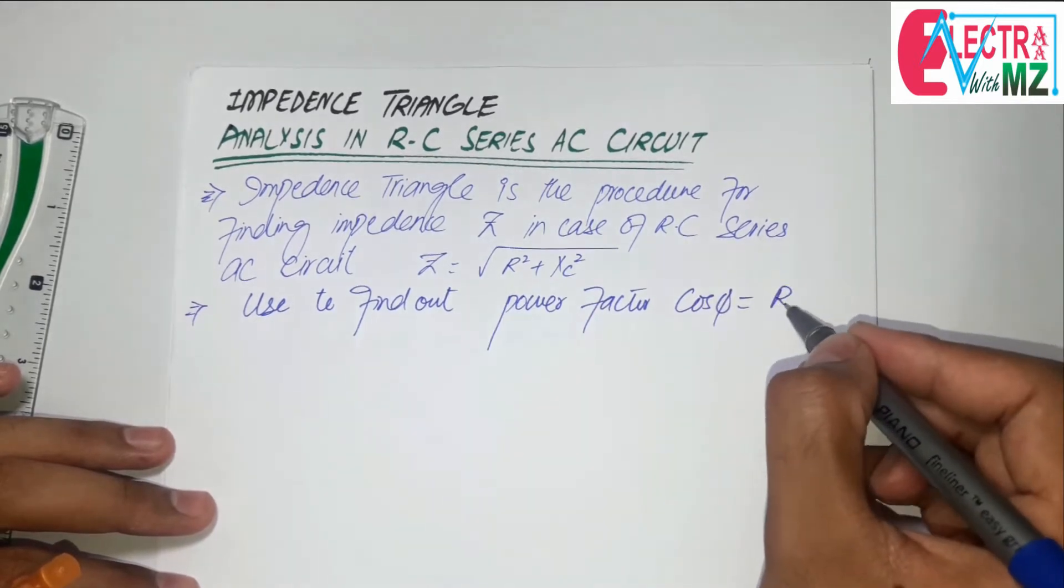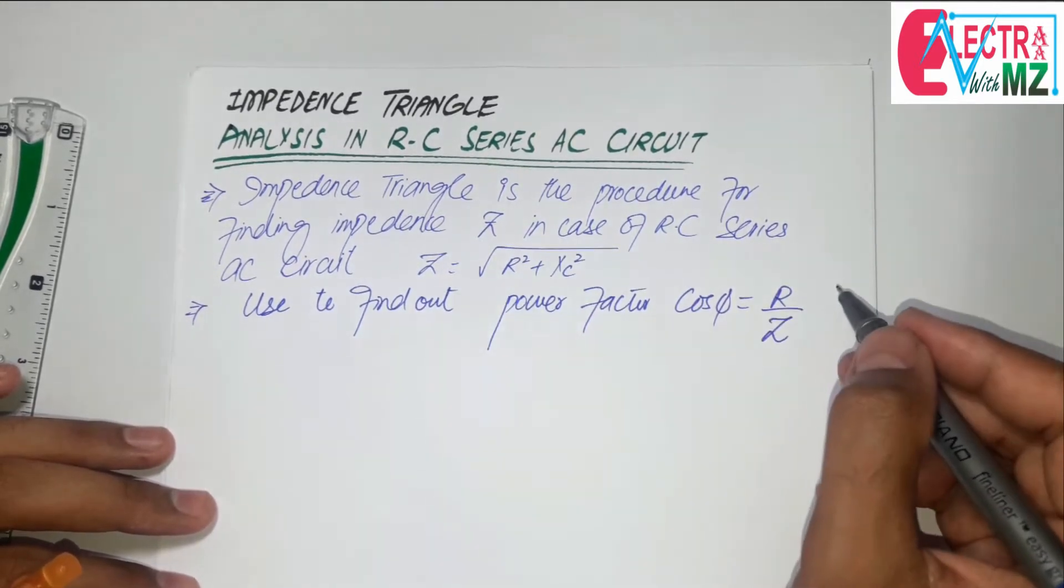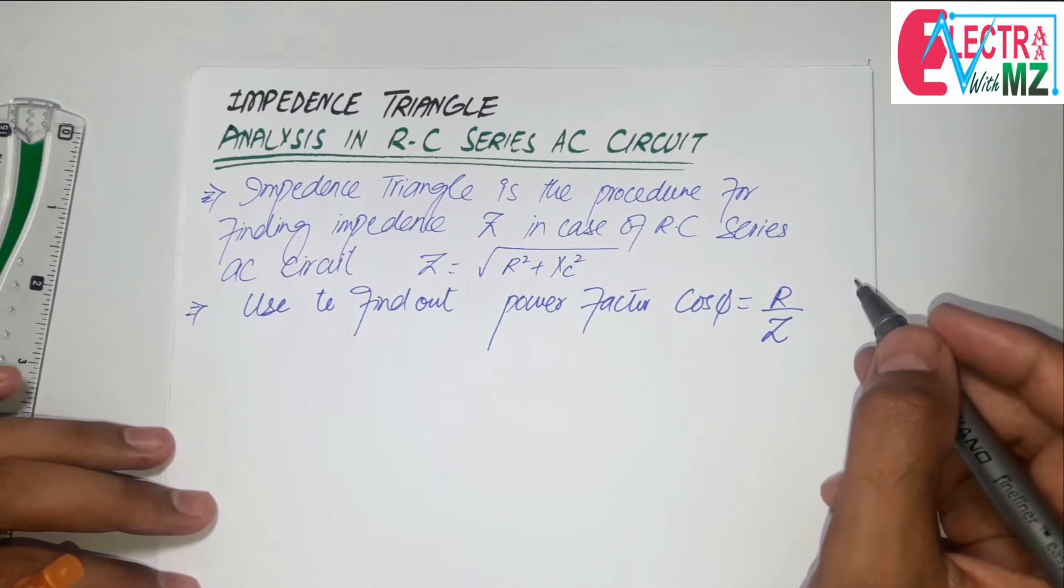Cos phi is equal to resistance over impedance.